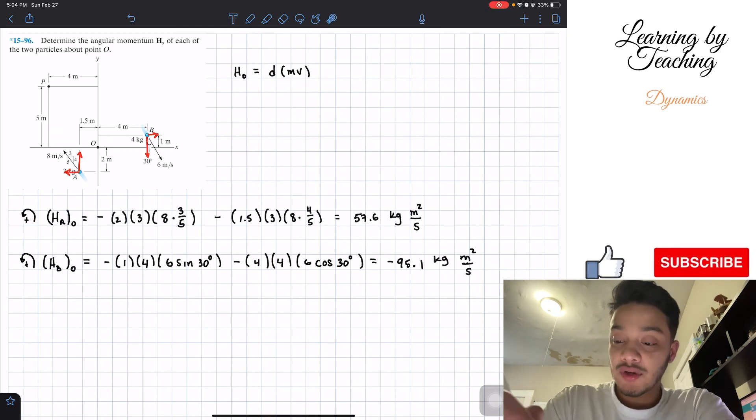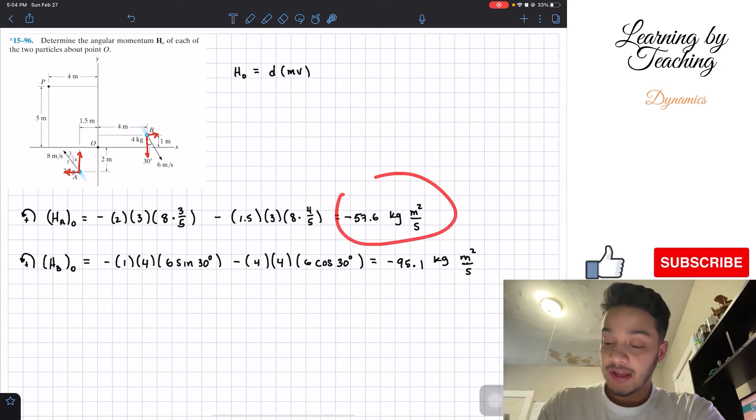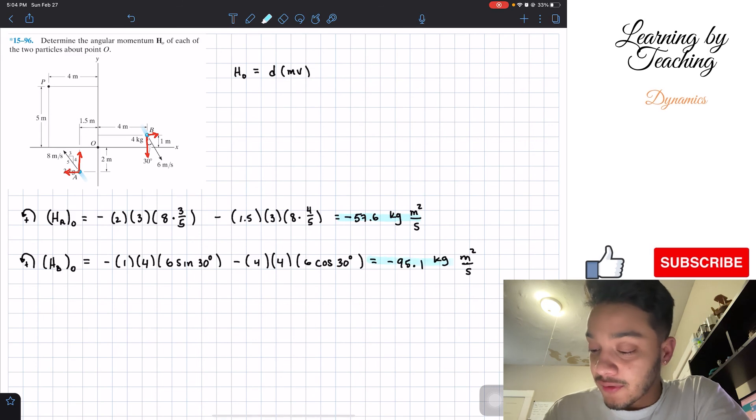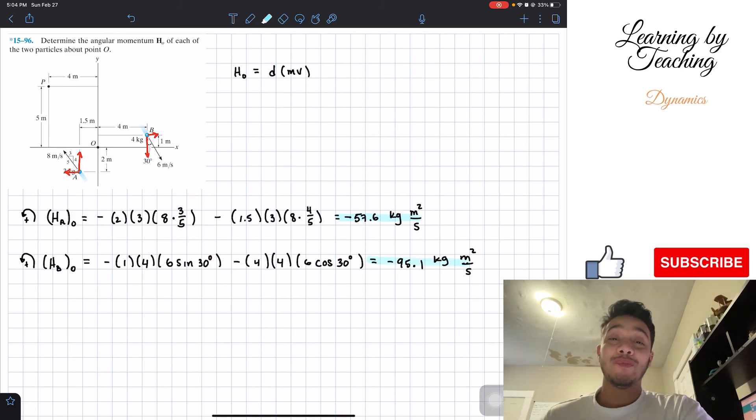One thing I'd like to note, I made a small mistake here. When I added them up in my calculator, I forgot to put the minus sign. Therefore, both of them should be negative because the moment is going in the clockwise direction for this blue particle. But this should be our final answer for this problem. So I hope you guys liked the video. Please push the like button, subscribe, and I'll see you guys in the next one.